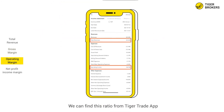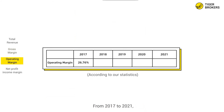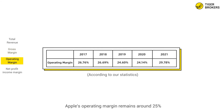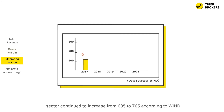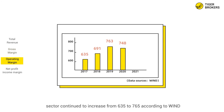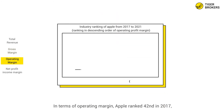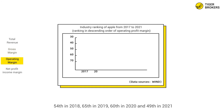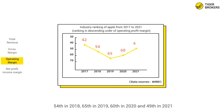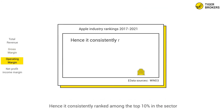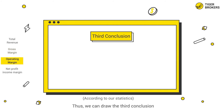For Apple's operating margin, which equals operating income divided by total revenue, we can find this data from the Tiger Trade app. From 2017 to 2021, Apple's operating margin remains around 25 percent. Meanwhile, the number of companies in the IT sector continued to increase from 635 to 765. According to Wind, in terms of operating margin, Apple ranked 22nd in 2017, 54th in 2018, 65th in 2019, 60th in 2020, and 49th in 2021.